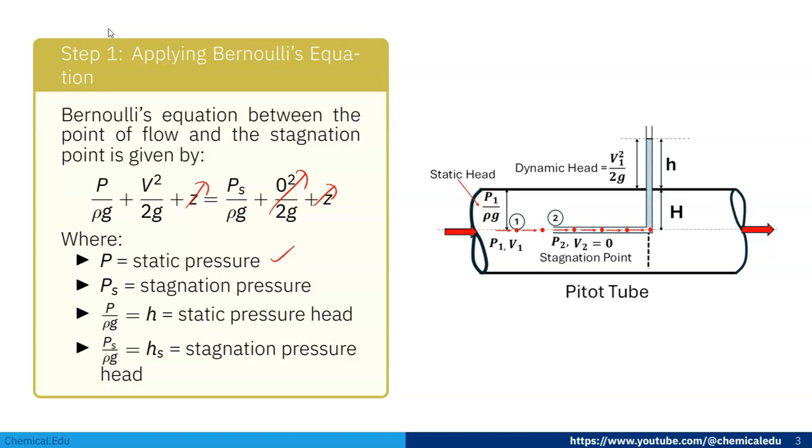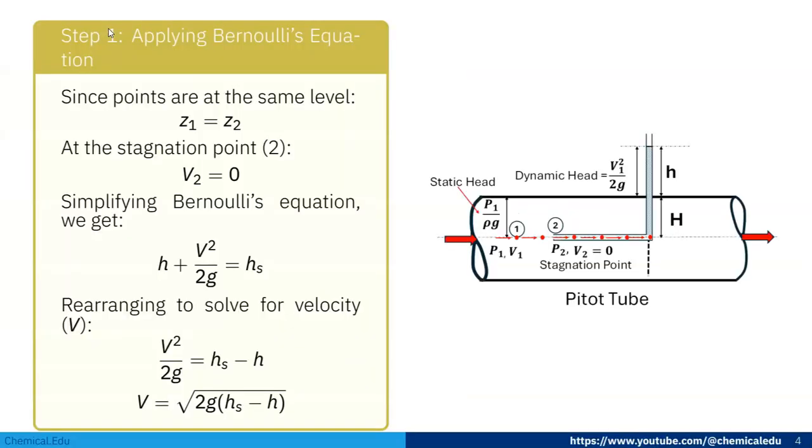Here p is static pressure and p_s is stagnation pressure. p/(ρg) is h, the static pressure head, and p_s/(ρg) is h_s, the stagnation pressure head. Since points are at the same level, z1 equals z2.